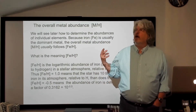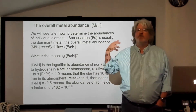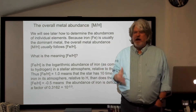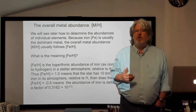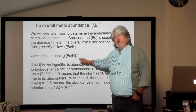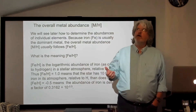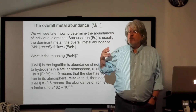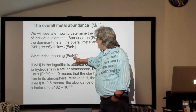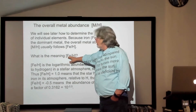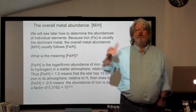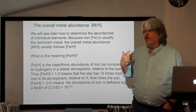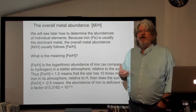If we talk about bracket Fe over H of zero, that means 10 to the zero power, which is one — that star has just as many iron atoms per hydrogen atom as the sun does. Or if I say Fe over H is minus one, that's 10 to the minus one, which is one-tenth. That means for every hydrogen atom in the star, it's got 10 fewer iron atoms compared to the sun — the ratio of iron to hydrogen in the star is 10 times lower than in the sun.